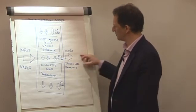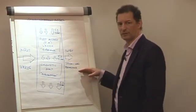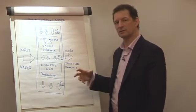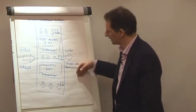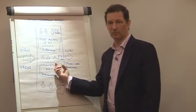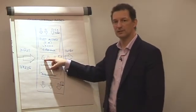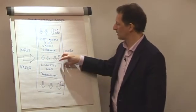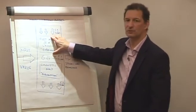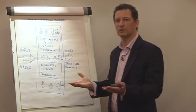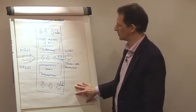By asking certain questions, for example, using the metamodel, we can begin to work our way back up this model to reveal the nature of the F2 filters, the deletions, distortions, and generalizations, with a view to getting back to original choice and opening up a person's map of the world. The NLP communication model.